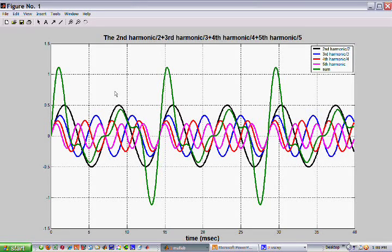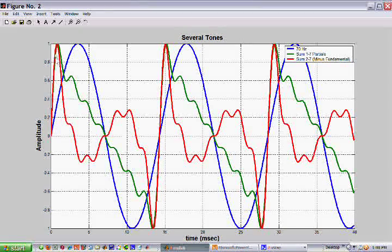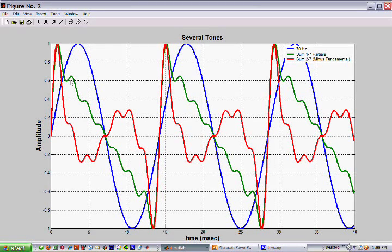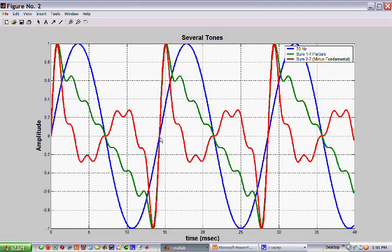Now look at the waves in summary. Here is the fundamental in blue. It has a period of 14.3 milliseconds. The green curve shows the sum of the 7 harmonics, including the fundamental. You see it repeats itself at 14.3 again. The red curve is the sum of the 2nd through 7th harmonics without the fundamental. And you see it's got a period equal to that of the fundamental, even though it's not present.